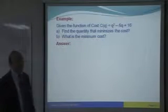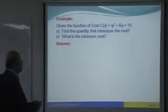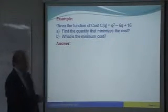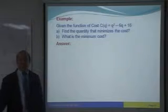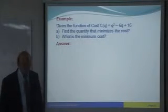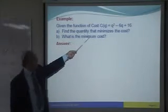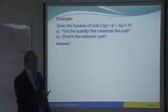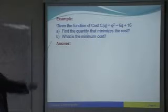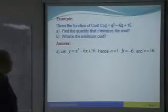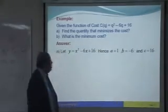Given the function cost equals to Q square minus 6Q plus 16. This is the cost function already given. Sometimes we don't give, we have to find. Now, already given, we use it. Find what? The quantity that minimizes the cost. So, we start with the cost function. Already given. So, let Y equals to Q square minus 6Q plus 16.